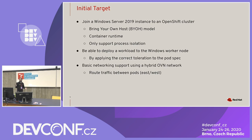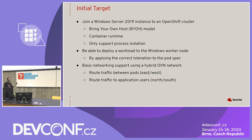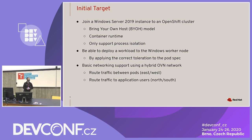The Windows container team's role is to glue those networking pieces together. You also want to be able to route traffic between pods — both Linux-to-Windows and Windows-to-Windows — and route traffic to application users wanting to access services running inside the Windows node.